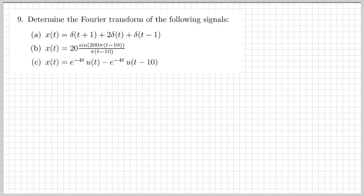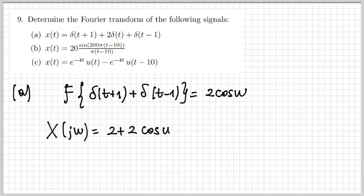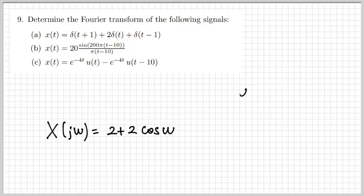One more exercise: we need to determine the Fourier transform of three signals. Starting with the first one — a very simple case — we recall that the Fourier transform of two impulses symmetrically placed at +1 and -1 is 2cos(ω). So X(jω) will be given by 2 + 2cos(ω).